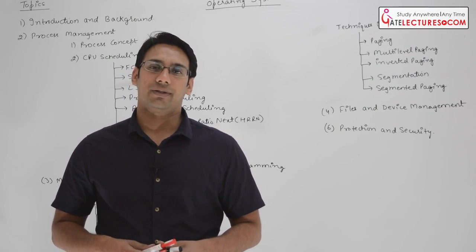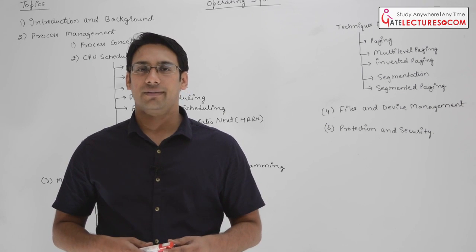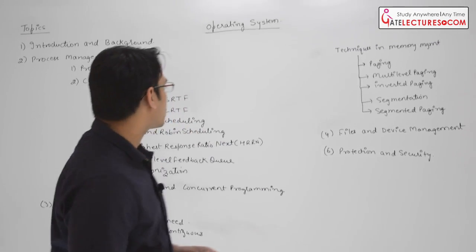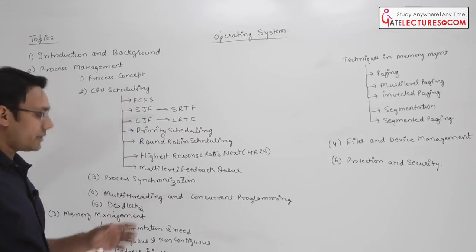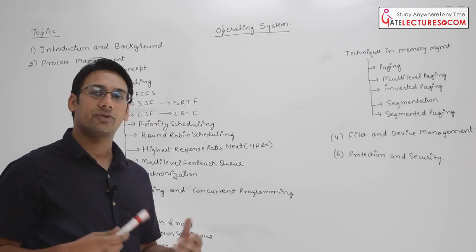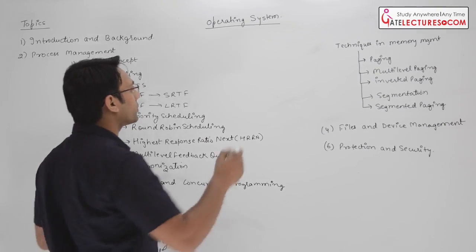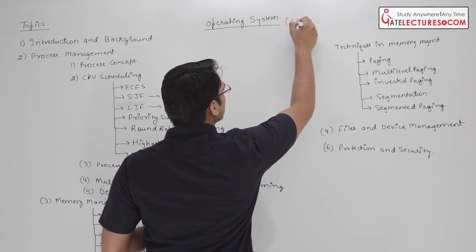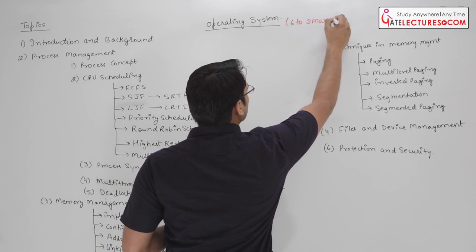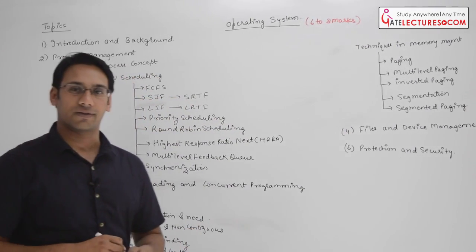We should discuss the operating system subject now. Before starting, let us summarize the topics we are going to study. In the GATE examination, operating system is a very important subject — it is a portion where you can score the maximum amount of marks. You can expect somewhere around 6 to 8 marks out of 100 in operating system.